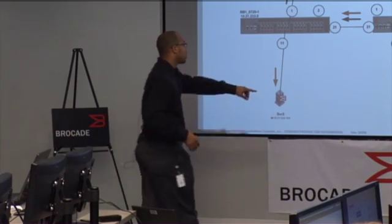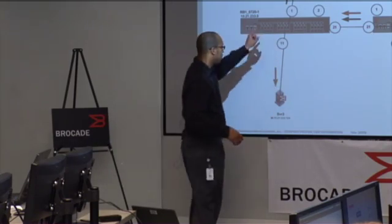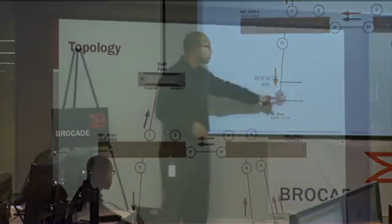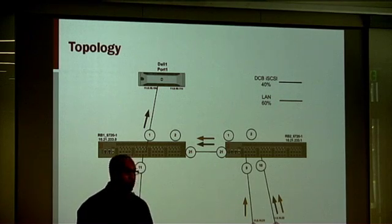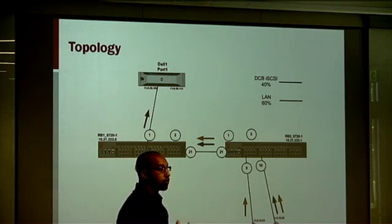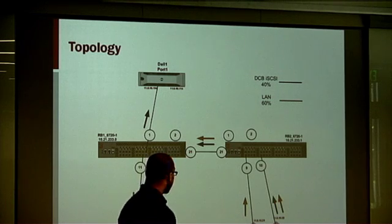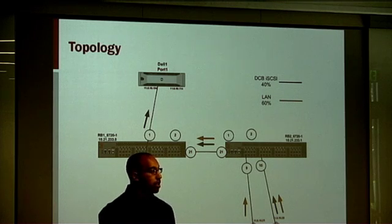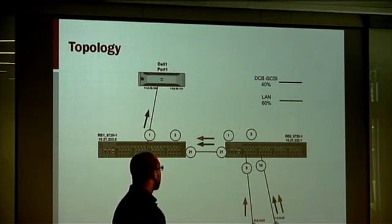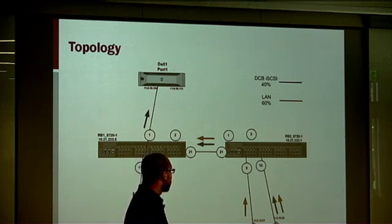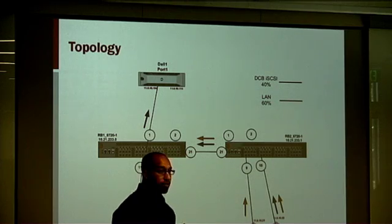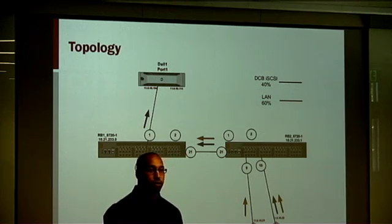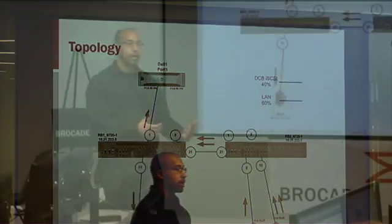The network traffic is going to be sent across to another server on the other side, running on its own priority and enforced to its own bandwidth. This shows that network traffic and iSCSI traffic can run within the environment without one bogging down the other.